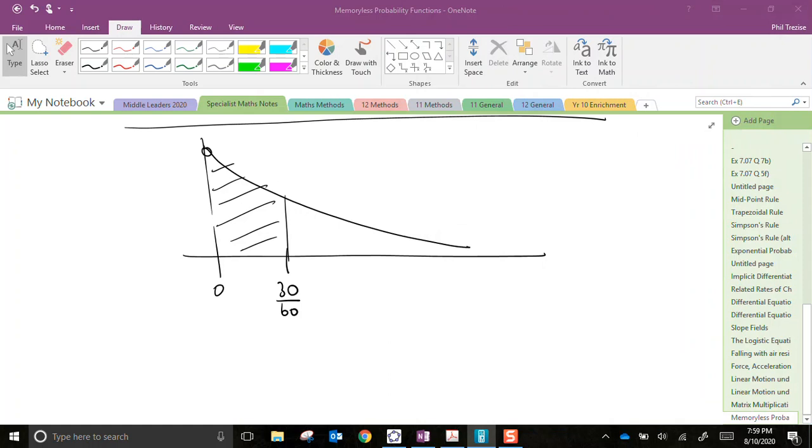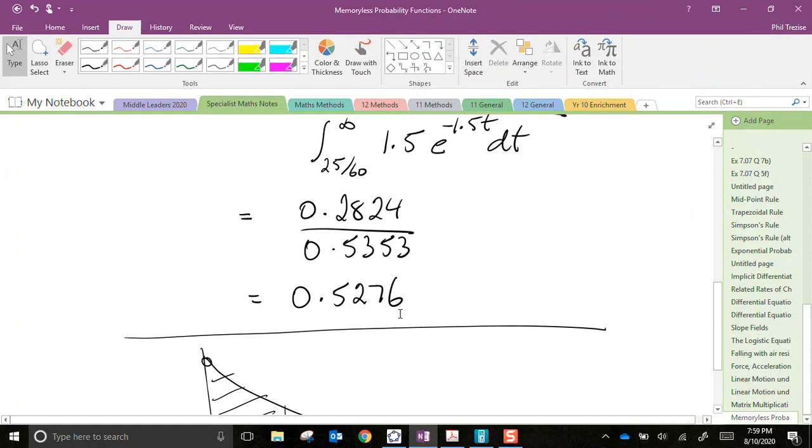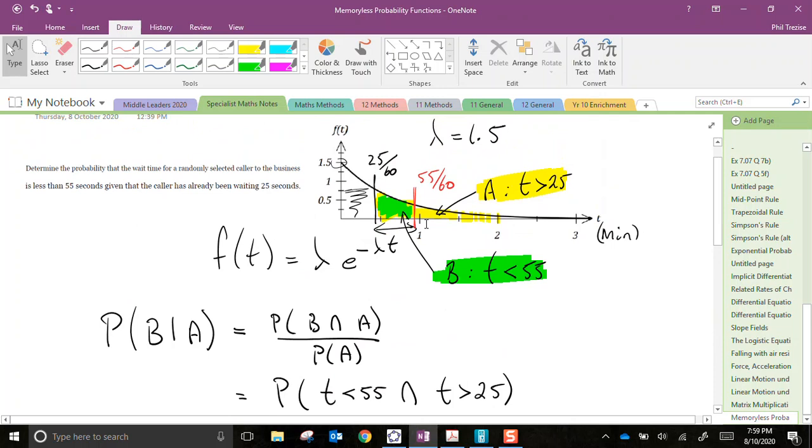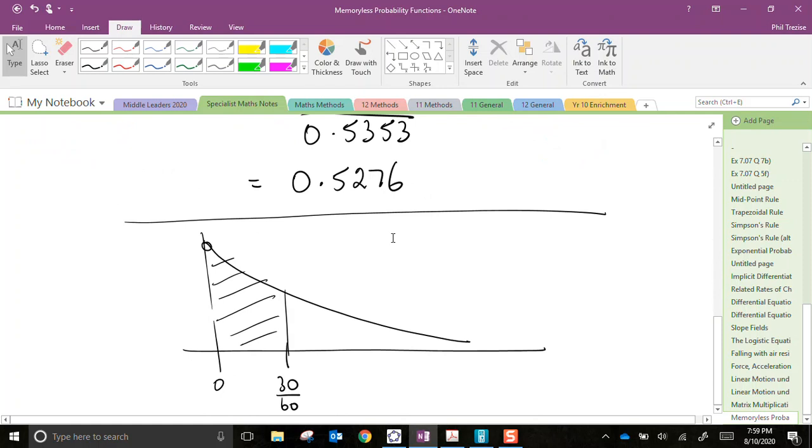And look at that answer: 0.5276. Now, it's not a coincidence that that's the same answer that we got for our conditional probability, because the time difference between our two events was 30 seconds, or half a minute. It turns out that the probability between 0 and 30 seconds at the beginning of this function is exactly the same: 0.5276.